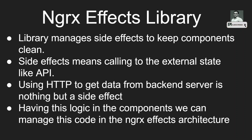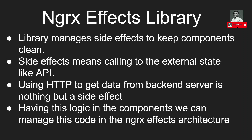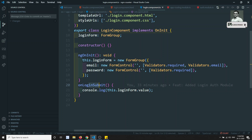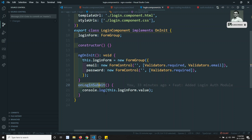Hi friends, this is Leela, welcome to my channel. In the previous video we designed the login authentication — the login form is ready and we need to send the request from the login to the backend server. So if the login email address and password are valid, we need to make the user logged in. To do that, in the component's login submit we need to call the auth service, which will make an HTTP call to the backend server and return a success response.